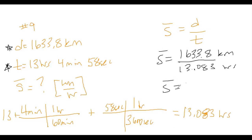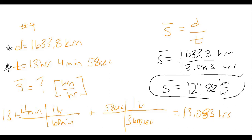Speed equals distance over time: 1,633.8 kilometers divided by 13.083 hours gives us an average speed of 124.88 kilometers per hour. Notice the line above the S — that means average. Whether you're doing statistics or physics, the bar on top of a variable always means average. We'll also see average velocity and average acceleration, which differentiates from instantaneous values.